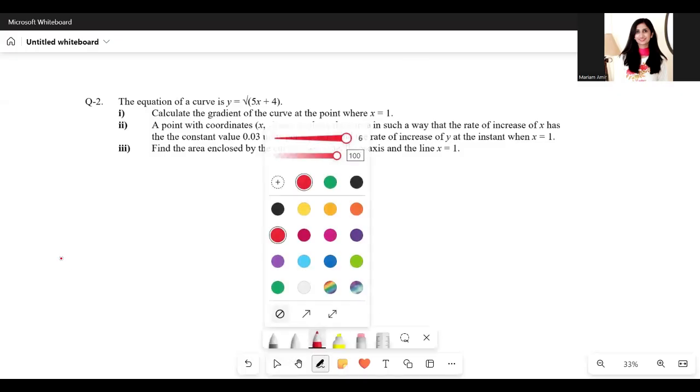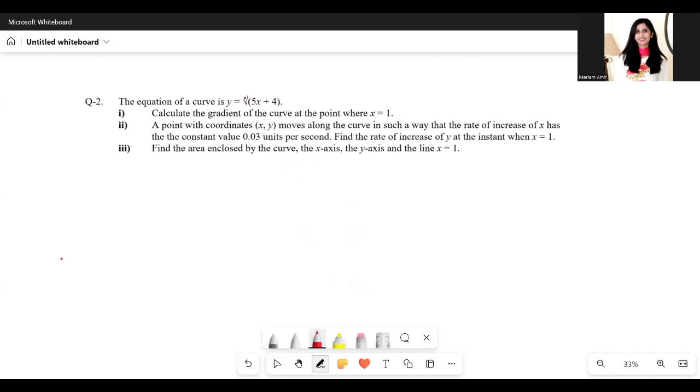Second question of the worksheet. The equation of a curve is y equals square root of 5x plus 4. Calculate the gradient of the curve where x equals 1.